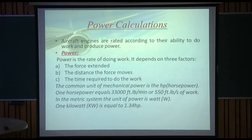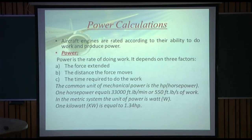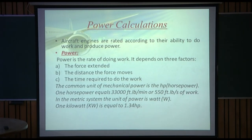Coming to power calculations: aircraft engines are rated according to their ability to do work and produce power. Power is the rate of doing work, and it depends on three factors: the force exerted, the distance the force moves, and the time required. The common unit of mechanical power is the horsepower — one horsepower equals 33,000 foot-pounds per minute or 550 foot-pounds of work. In the metric system, the unit of power is watts, and 1 kilowatt equals 1.34 horsepower.